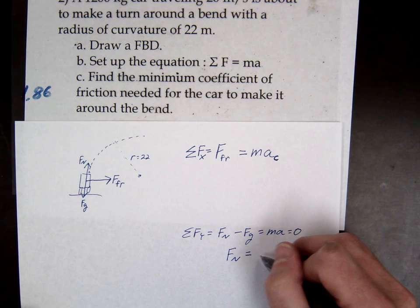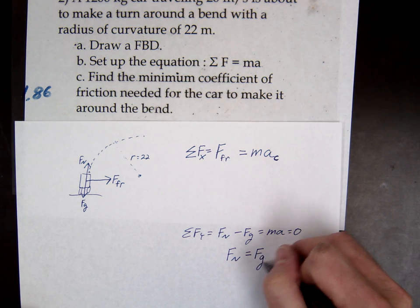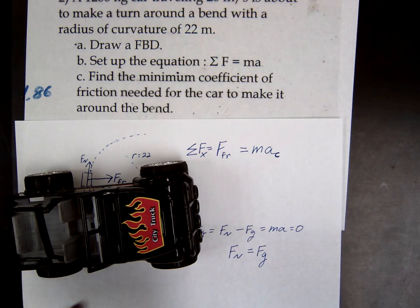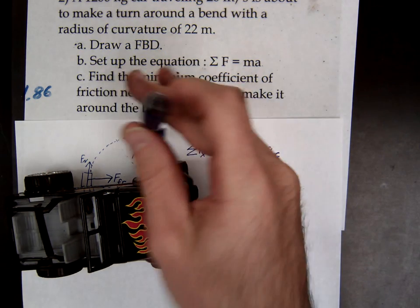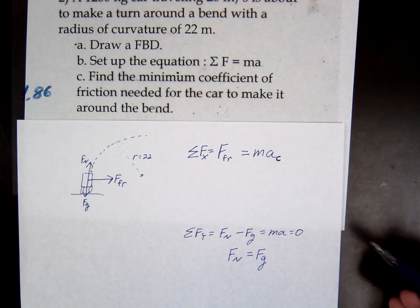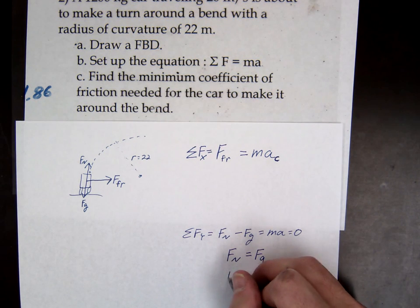This leaves us with the familiar relationship when we're on flat ground. What can we say is true about the normal force? It's the same as the weight. Gravity is pulling down and the normal force would be exactly equal to it. So fn equals mg.